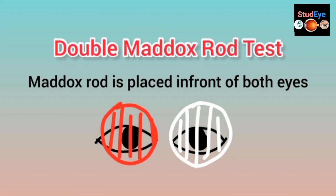The Double Maddox Rod Test is performed by placing two Maddox rods in front of both eyes — one in front of each eye. I am using red in front of the right eye and white in front of the left eye. I recommend using two different colors so the patient can distinguish between the two lines and you can identify which line corresponds to which eye.